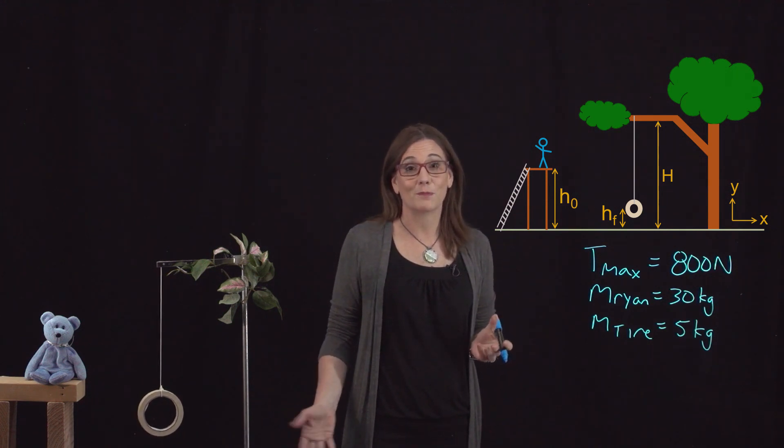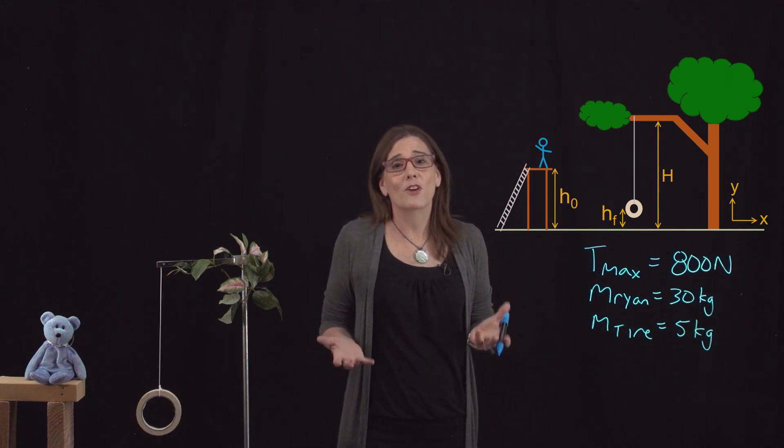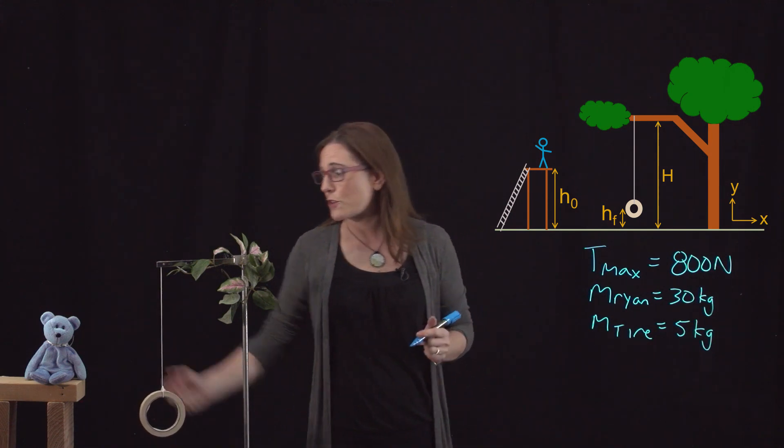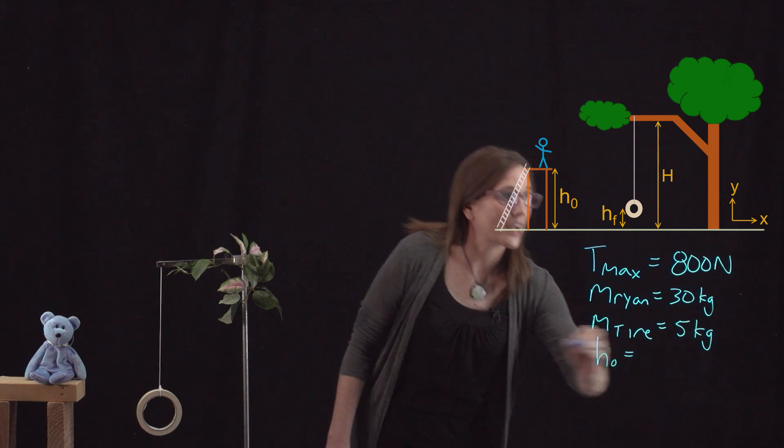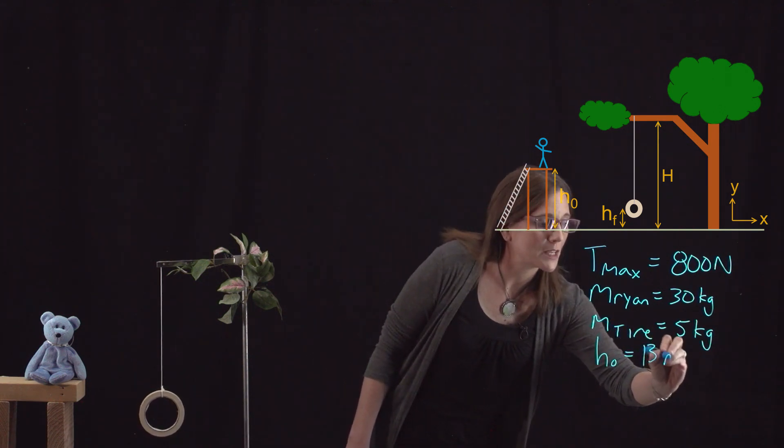You then take your measuring tape, you go in their backyard, and you measure all the heights that you need in order to do the physics. The first thing you need is the height of the platform, which we've called H0 in the diagram. H0 is 13 meters.